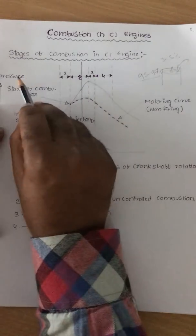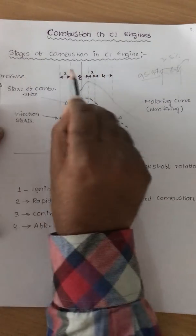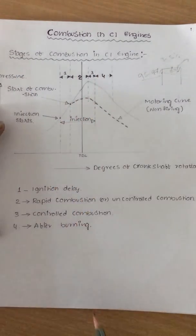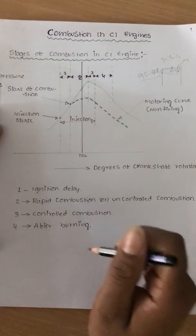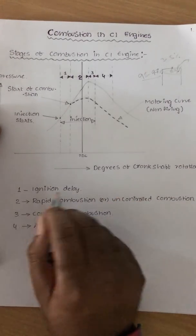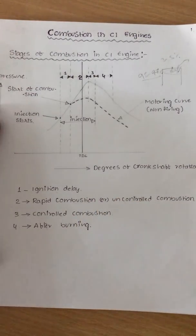So these are the stages in the combustion in a CI engine. In the next class, we will discuss each one in a brief way. Thank you very much.